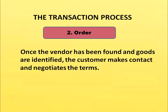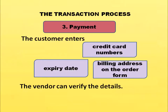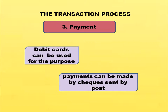The next transaction process is order. Once the vendor has been found and goods are identified, the customer makes contact with the seller and negotiates terms and conditions. If satisfied, the customer fills a registration form to have an account with a password. The customer enters credit card number, expiry date, and billing address on the order form. The vendor verifies these details before delivering the goods. Debit cards and checks sent by post can also be used for payment.